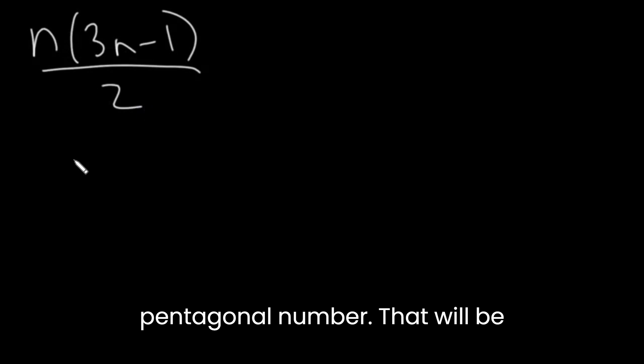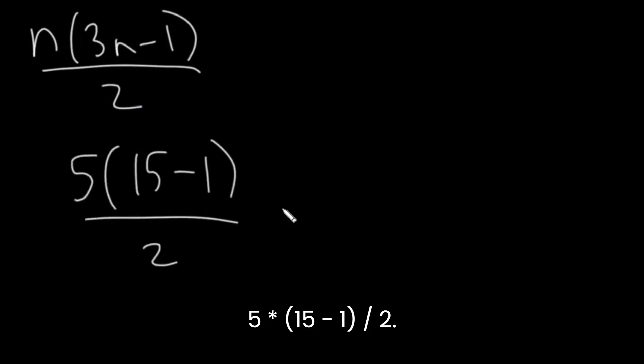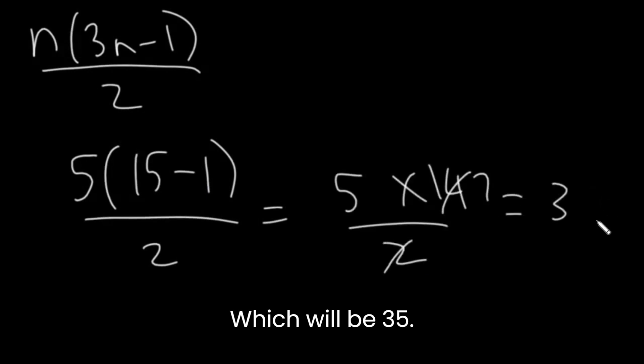So let's see if we want to find the fifth pentagonal number. It'll be 5 times 15 minus 1 divided by 2. This will be 5 times 14 divided by 2, which will be 35.